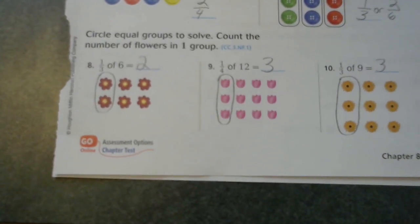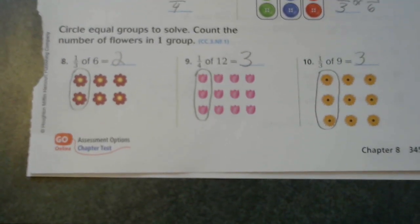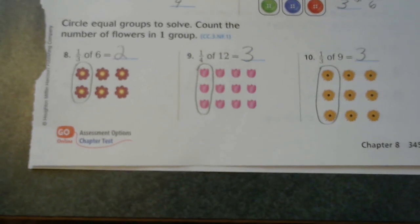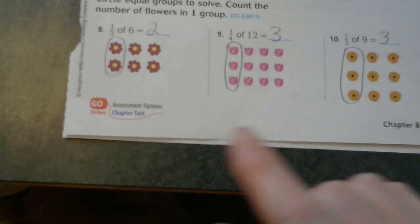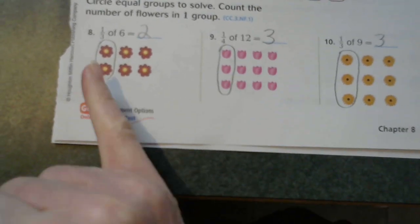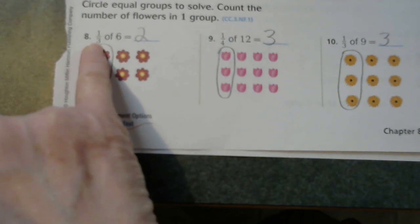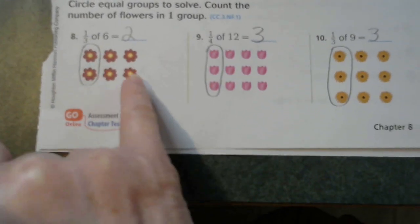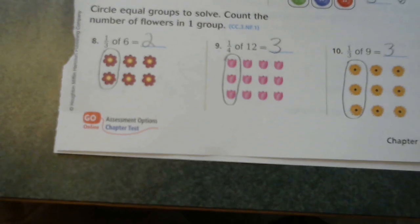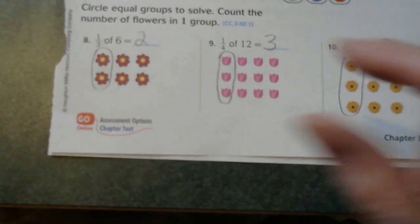Number eight says circle each group to solve. Count the number of flowers in one group. Well, there are one third of six. They have broken the groups into thirds. One, two, three, four, five, six. And we have to circle one third. One third equals two.